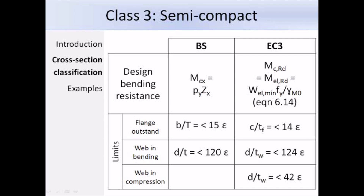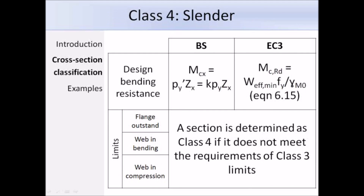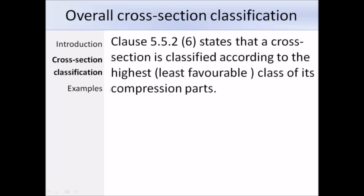For class 4, like BS 5950, Eurocode 3 classifies a section as class 4 if it does not meet the class 3 limits. The design bending resistance equals the effective modulus W_eff,min times the yield strength divided by a partial factor — expression 6.15 in Eurocode 3. Clause 5.5.2(6) states that a cross-section is classified according to the highest (least favourable) class of its compression parts; alternatively, clause 5.5.2(7) allows classification by quoting both flange and web classifications separately.